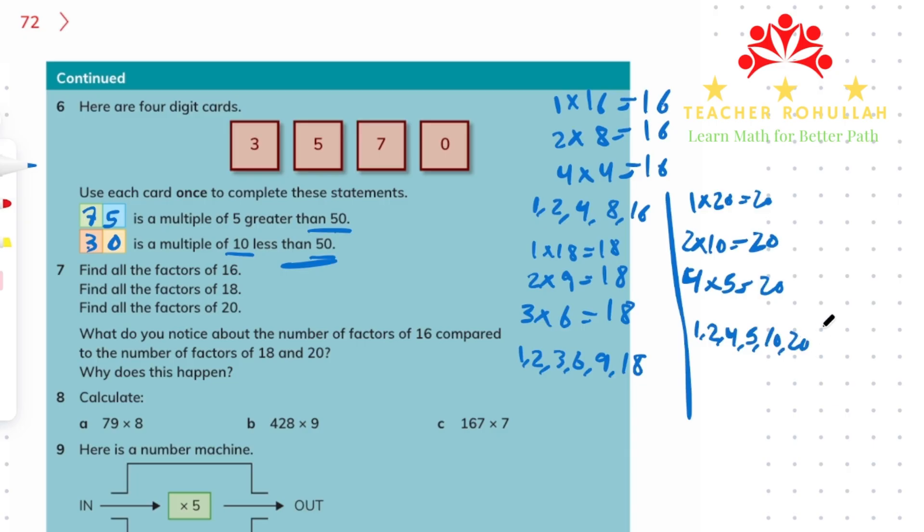Now it says, what do you notice about the number of factors of 16 compared to the number of factors of 18 and 20? Why does this happen? Let's count. We have 5 factors for 16, we have 6 factors for 18, and we have 6 factors for 20.